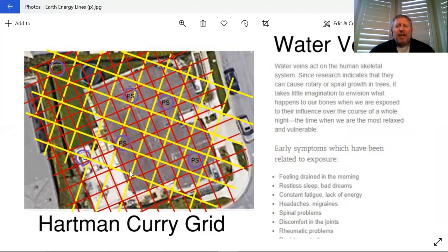We're going to talk about that later. We'll talk a lot about photographs and images and as above, so below, and how images can translate power and so on. Right now we're just going to look at this and how this may look. This Hartman-Curry grid doesn't show any of the Benker grid, just the Hartman-Curry grid, but it does show power spots. These little PSs here are the power spots also within a home.